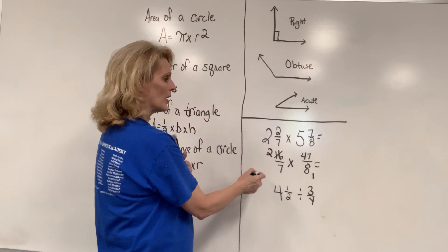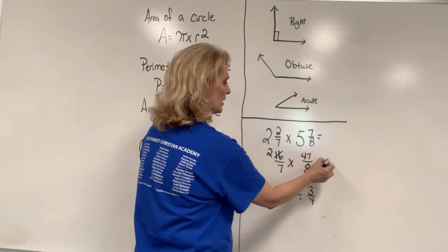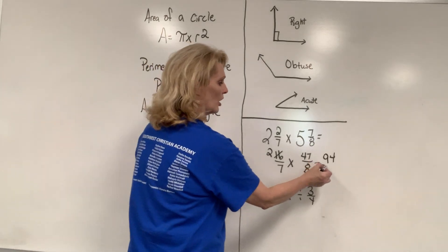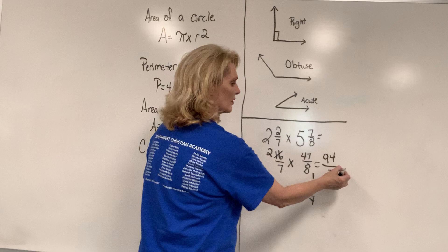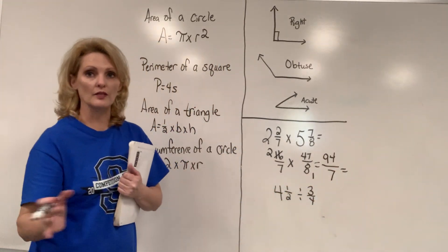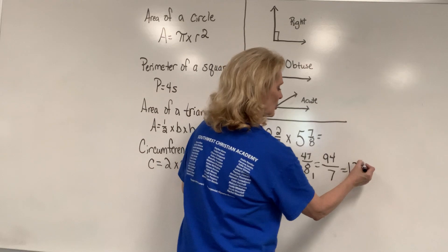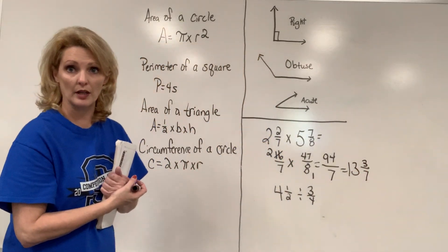Then you'll multiply 47 times 2, which will end up being 94 divided by or over 7 times 1. And when you finish with that division problem, then you should end up with 13 and 3 sevenths. Because you always keep your same denominator.